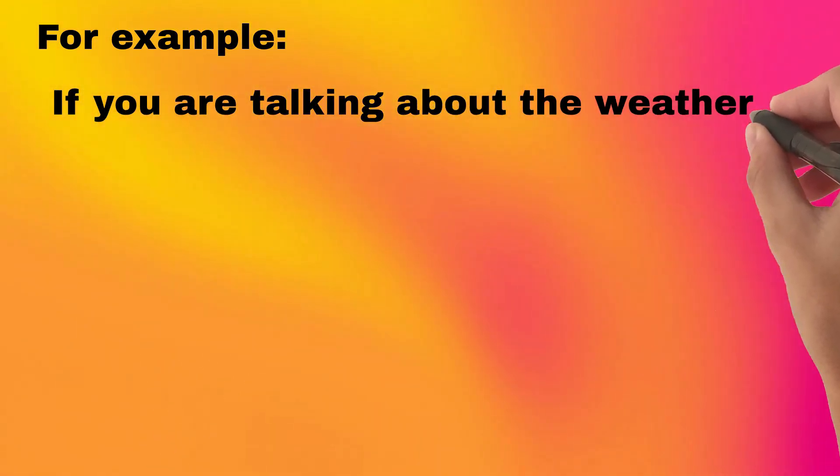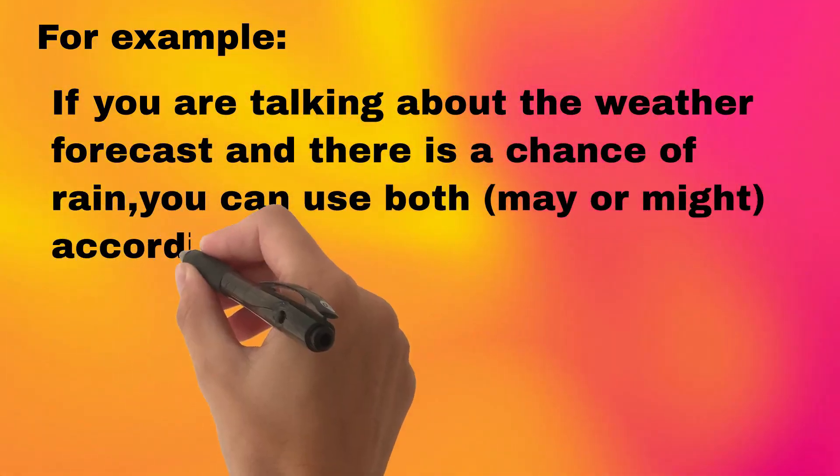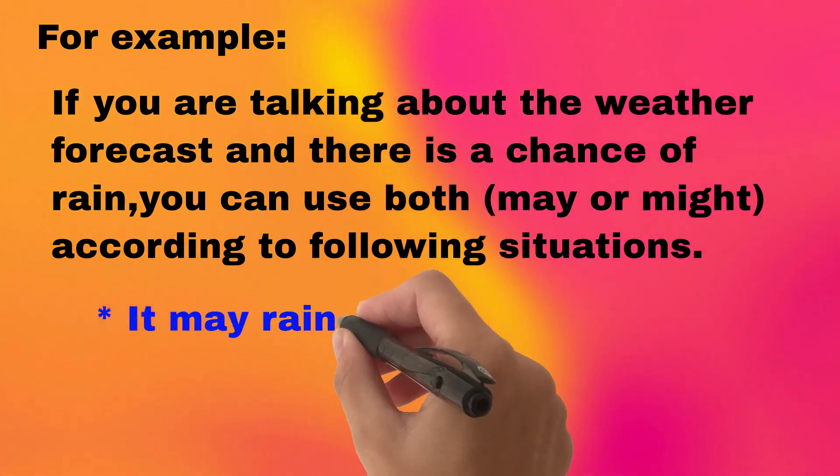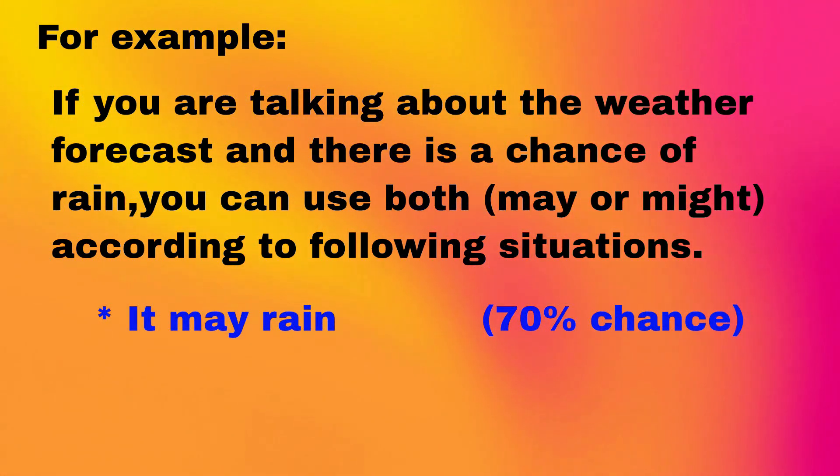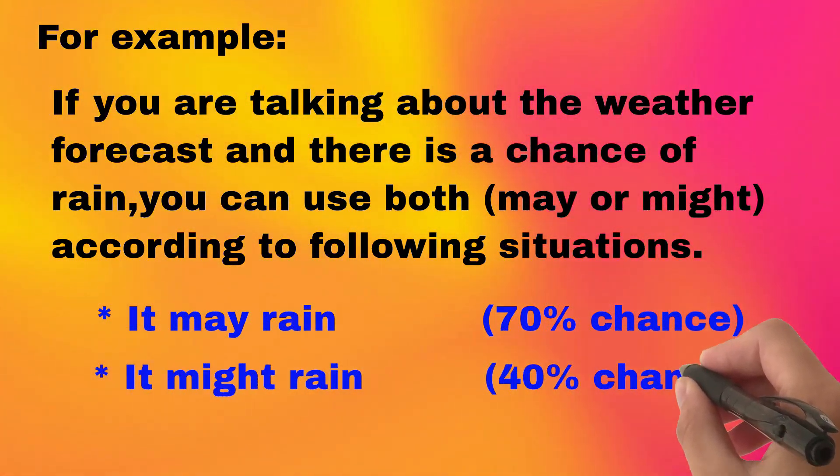For example, if you are talking about the weather forecast and there is a chance of rain, you can use both may or might according to following situations. It may rain if there is a 70% chance of rain. It might rain if there is a 40% chance of rain.